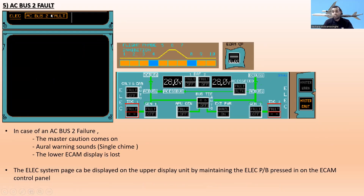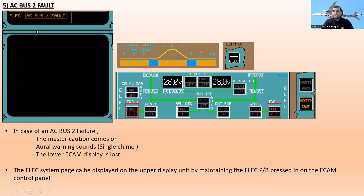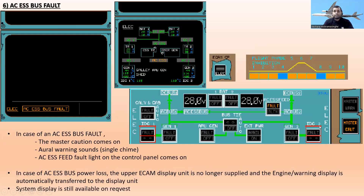The next one is AC bus two fault. In case of AC bus two failure, master caution comes on with a single chime oral warning, and the lower ECAM display is lost. The ELEC system page can be displayed on the upper display unit by maintaining the ELEC push button pressed in on the ECAM control panel. By pressing that push button, we can display the ELEC system page on the upper ECAM.